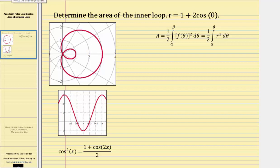The area of the inner loop is this area here. Using polar coordinates, area is equal to one half times the integral from alpha to beta of the square of f of theta, d theta, where f of theta is the same as r.